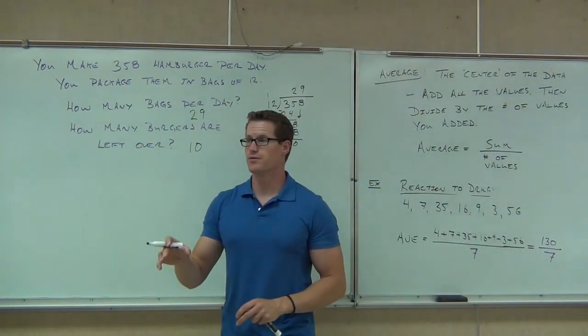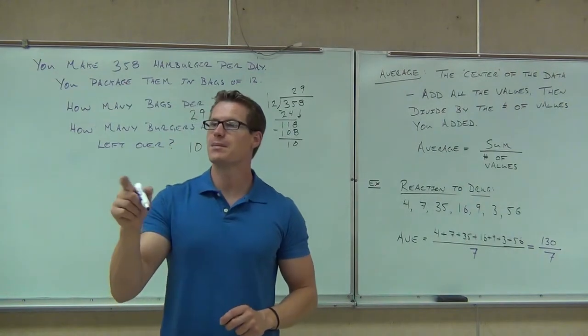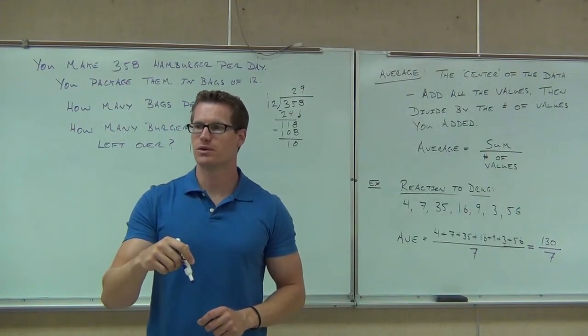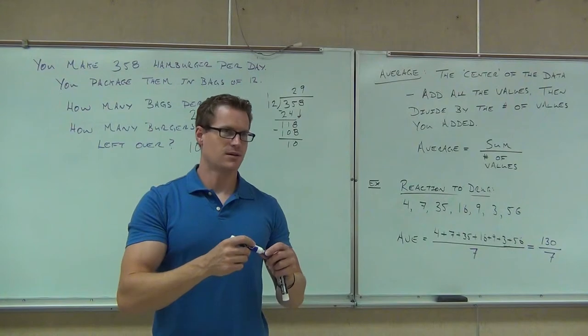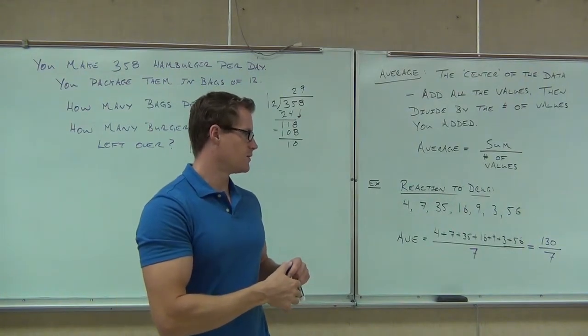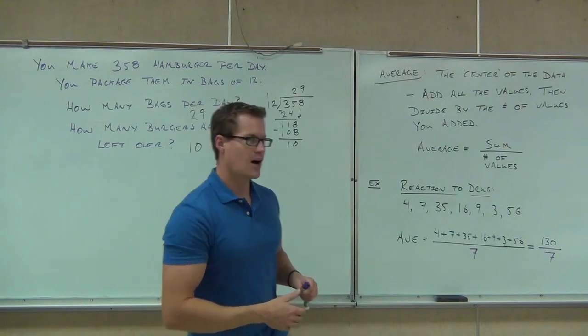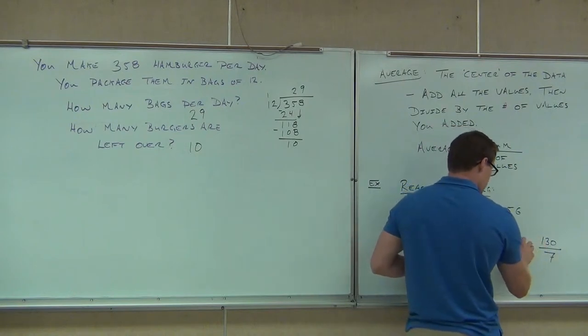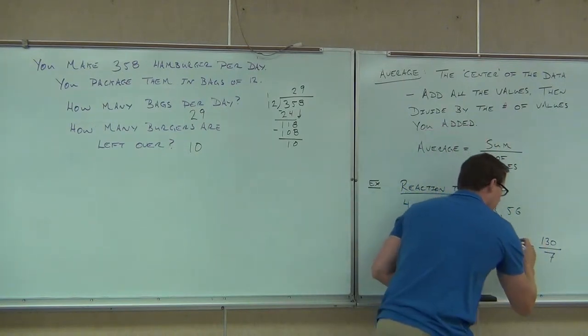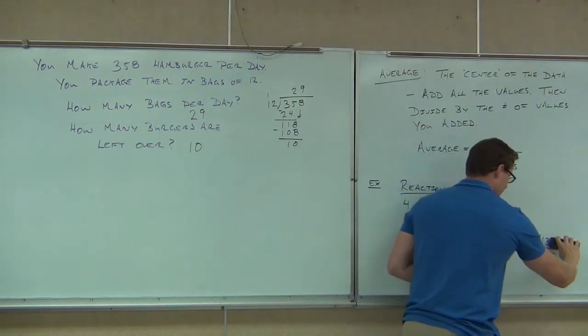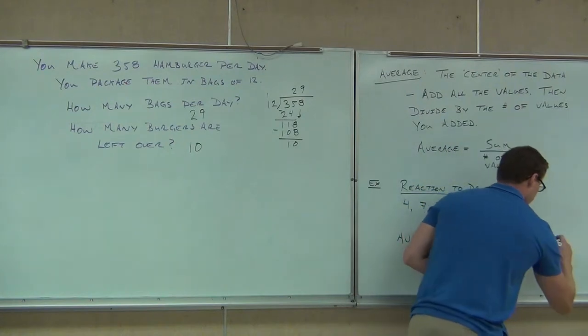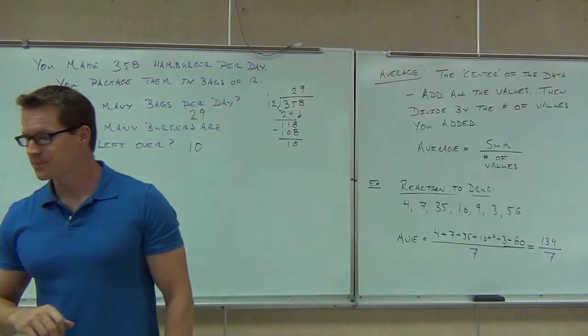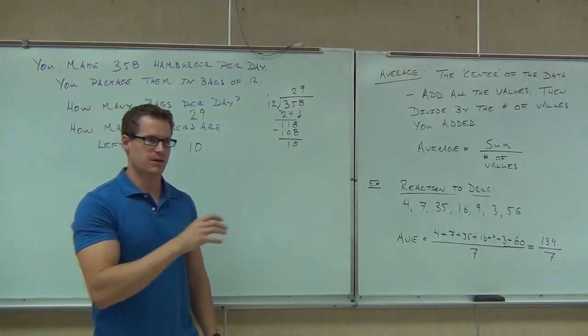So right now we're just going to take 130, we're going to divide by 7. How much? 18 point, okay, so we have a decimal, don't we? We should change this. With the remainder of 4? I'm going to change our problem here real quick. Sorry. This guy had a really bad headache. Let's make it 134. My bad. We haven't gotten to decimals yet, so I can't make you do decimals yet.